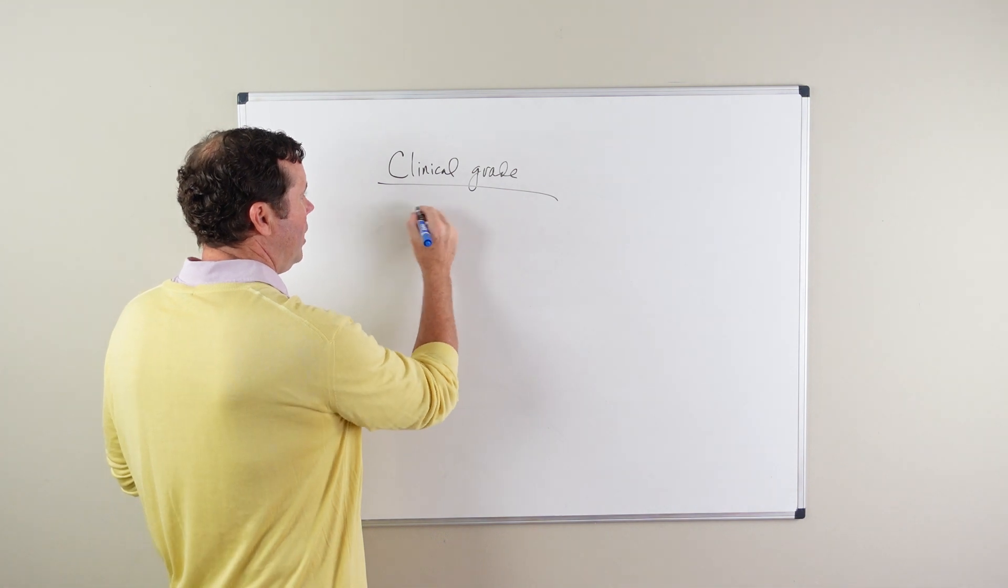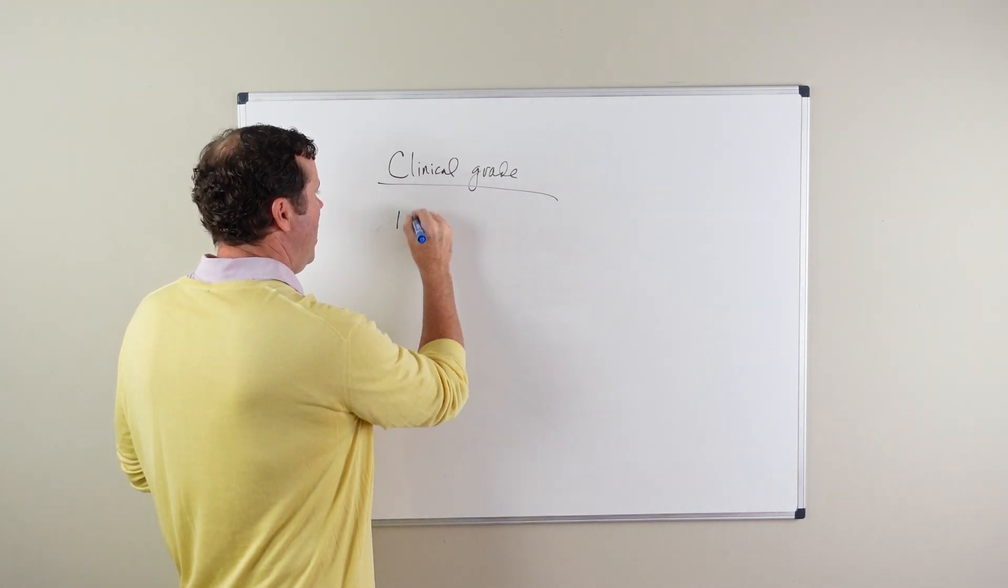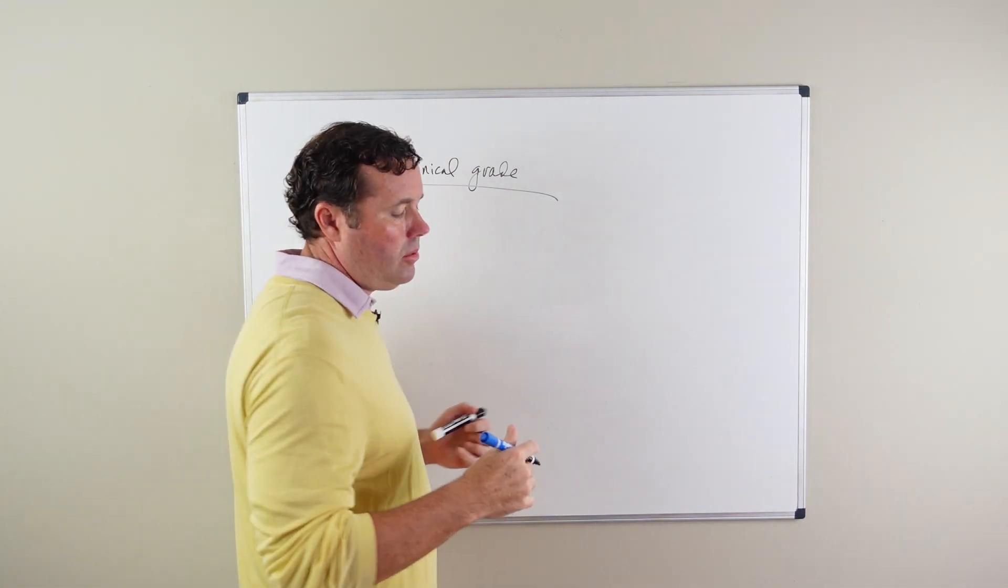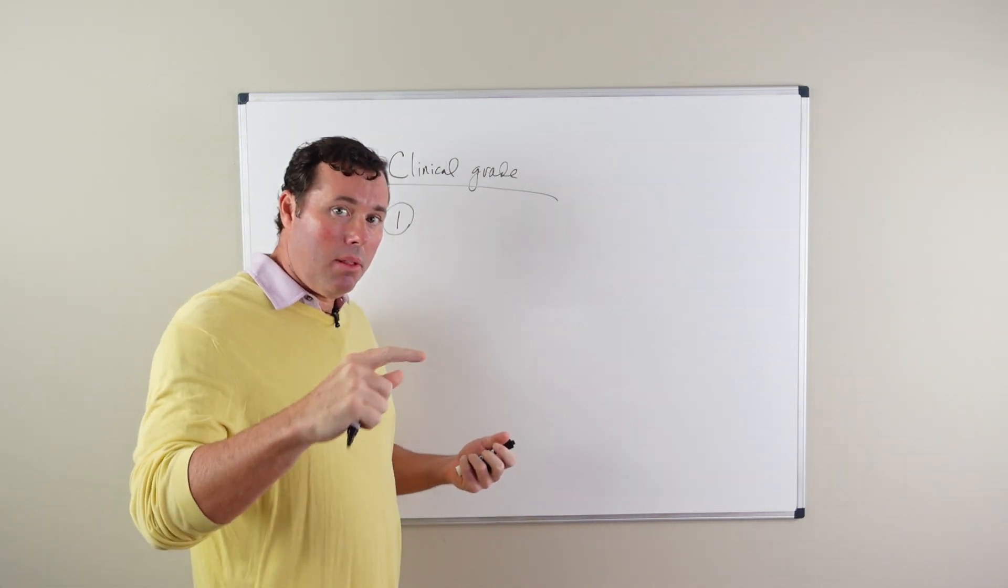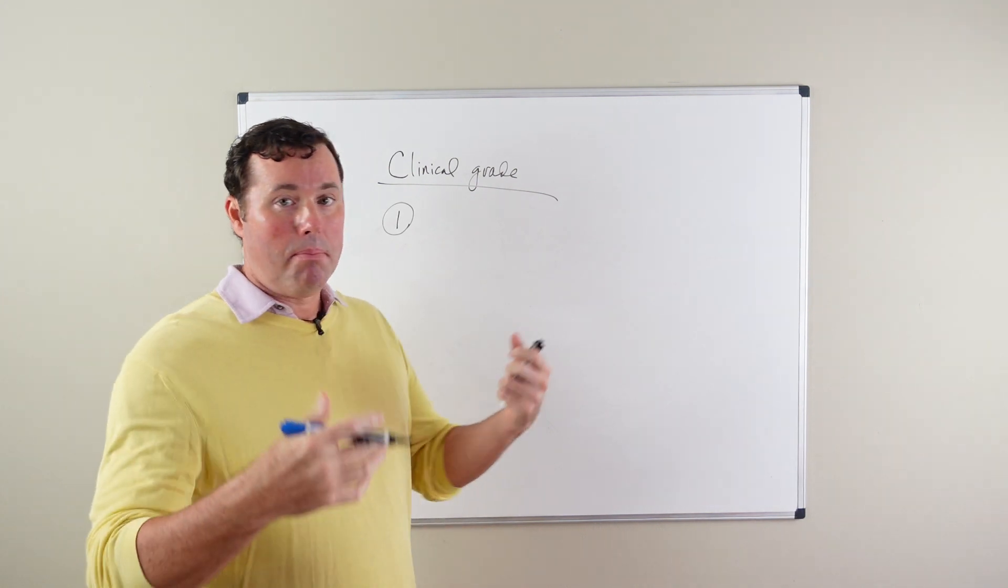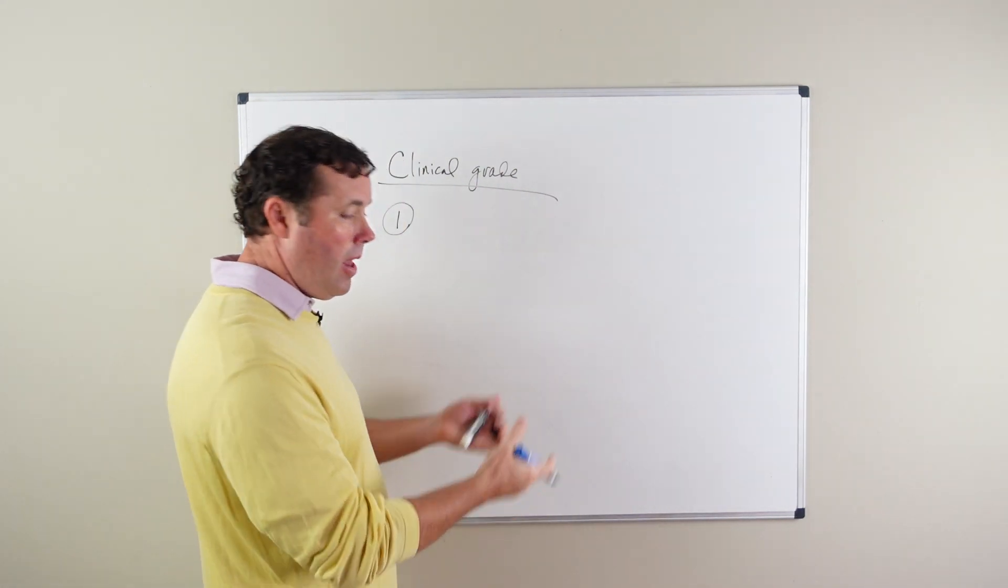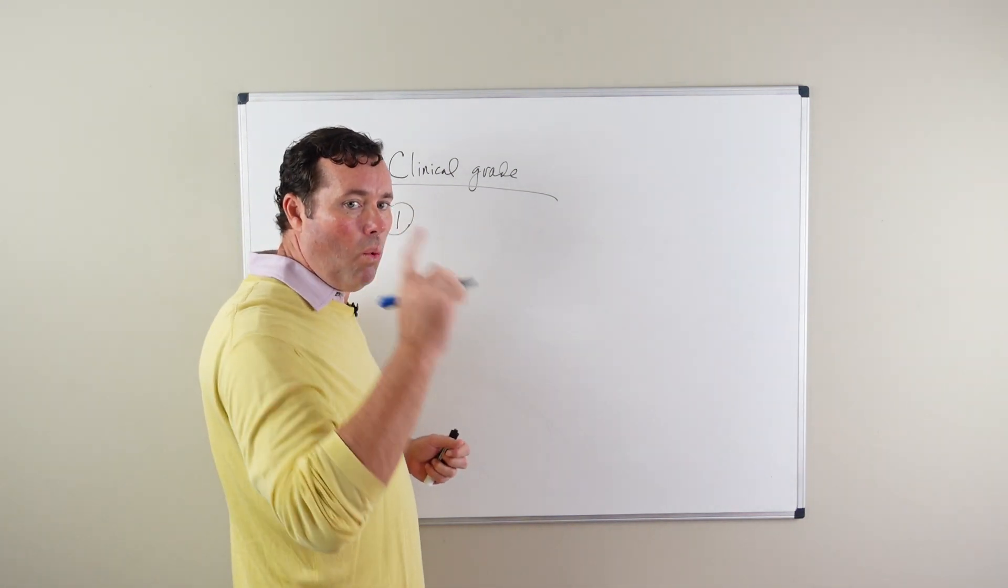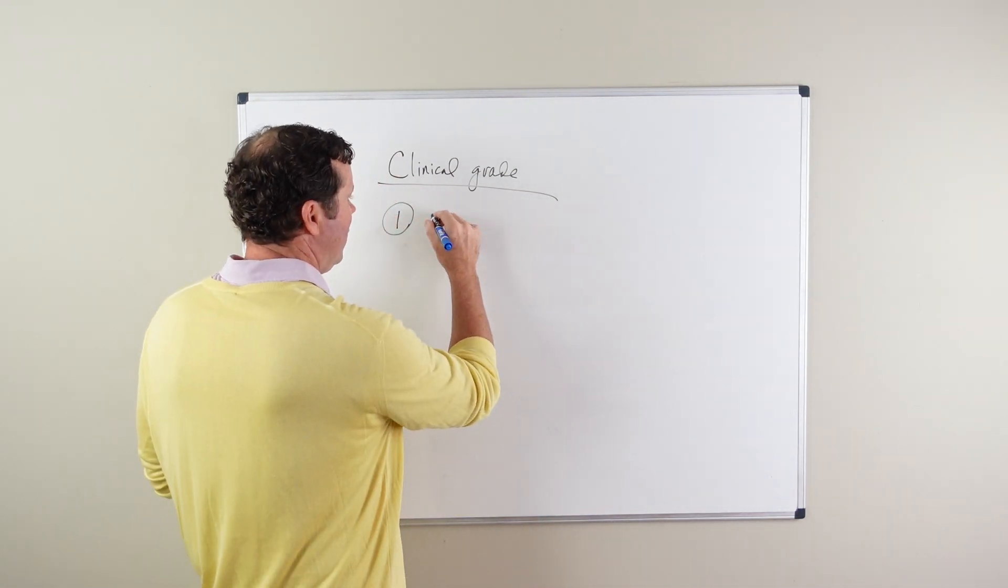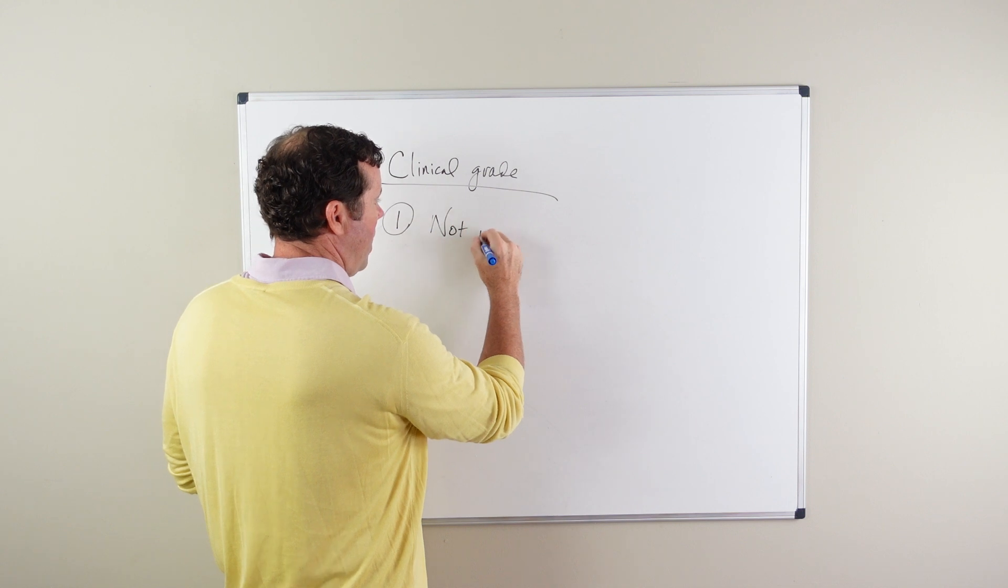Clinical grade one is a cancer that's not palpable with the finger. It's usually picked up on PSA screening, then a biopsy happens and the cancer is found. So when you have clinical grade one, the cancer is not palpable.